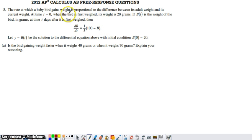So time T equals zero when the bird's first weighed is 20 grams. B of T is the weight of the bird. And T is measured in days after its first weighed. Y equals B of T is the solution to this differential equation with the initial condition of B of zero equals 20. And they kind of told us that in sentence form up here.